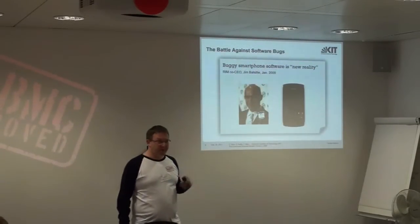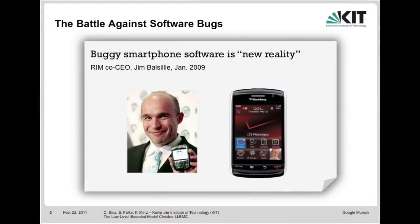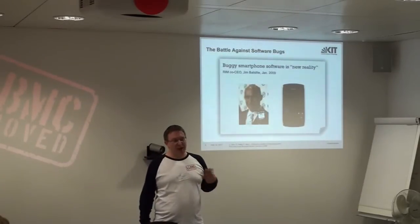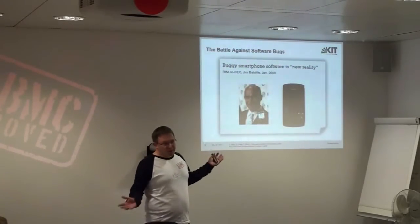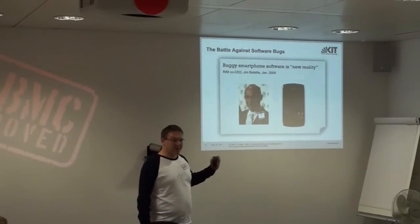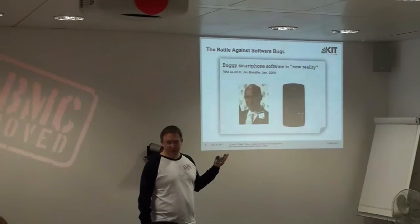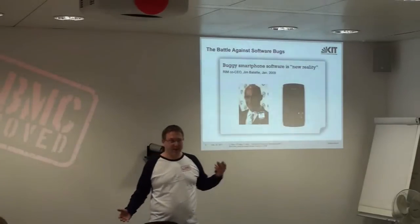Another example from around the same time is also about mobile devices, this time from Research In Motion — the BlackBerry Storm, introduced at the end of 2008, which suffered from bugs that many users complained about. Perhaps even more interesting than the bugs was the reaction of co-CEO Jim Balsillie. He said in an interview that buggy smartphone software is just a new reality — suggesting you cannot do anything about it because of time pressure and insufficient resources, and you just have to accept bugs in your software, hoping they vanish in future releases. But of course this is not a position we want to keep.